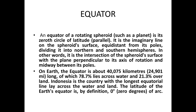What is the equator? An equator is basically the zero degree latitude. An equator of a rotating spheroid is its zeroth circle of latitude. It is the imaginary line on the spheroid surface, equidistant from its poles, dividing it into northern and southern hemispheres.